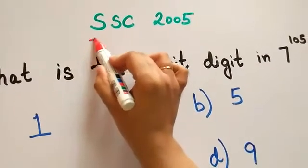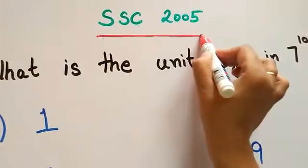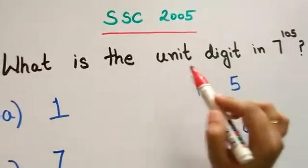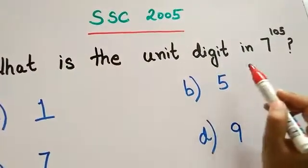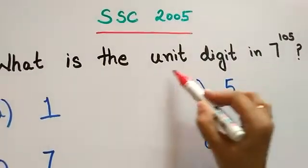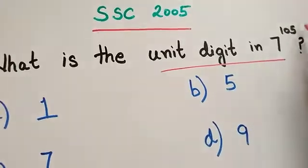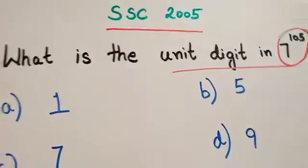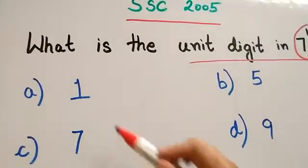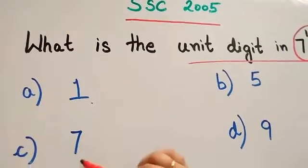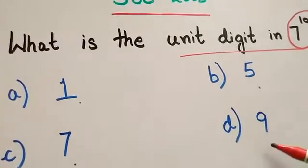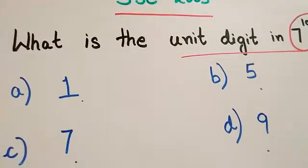This question has come in SSC 2005. What is the unit digit in 7 raised to the power 105? The options given are 1, 7, 5, or 9.